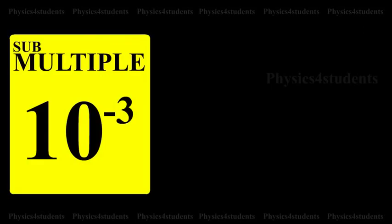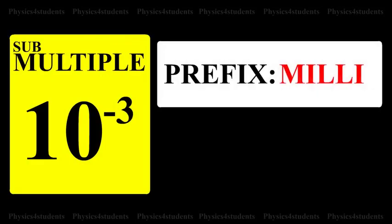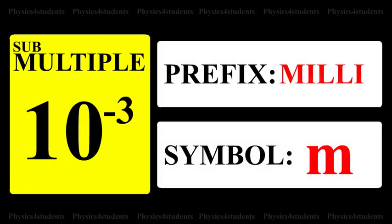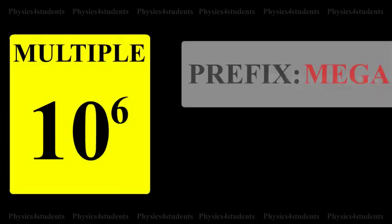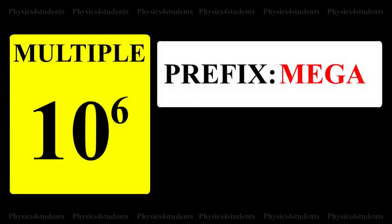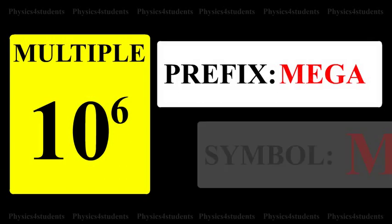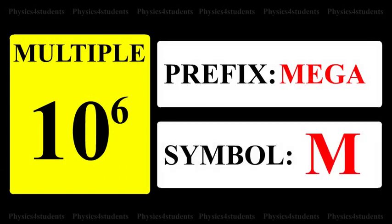Submultiple is 10 raised to minus 3: prefix is Milli, symbol is M. 10 raised to 6: prefix is Mega, symbol is M.